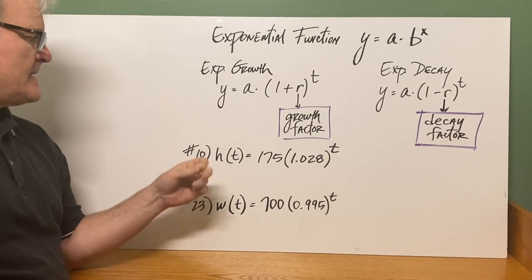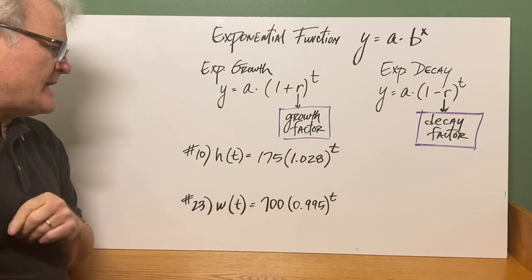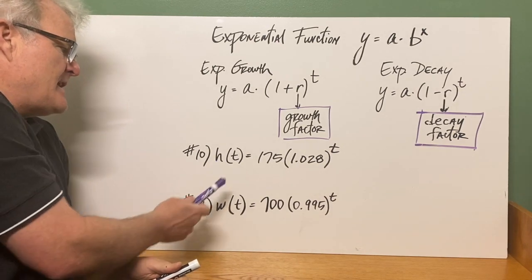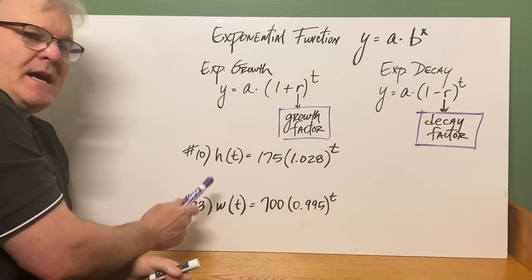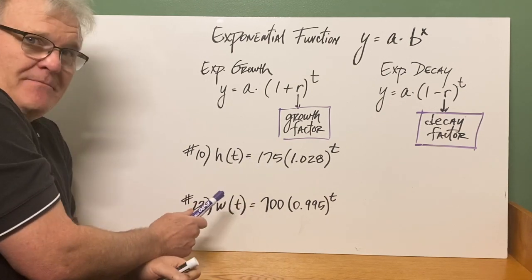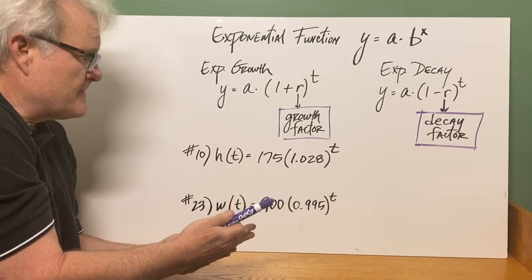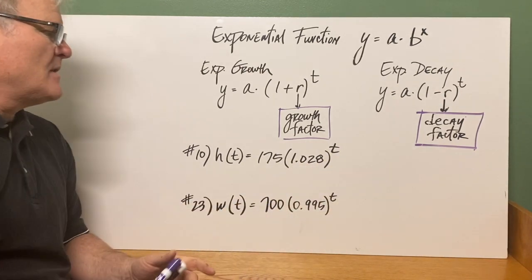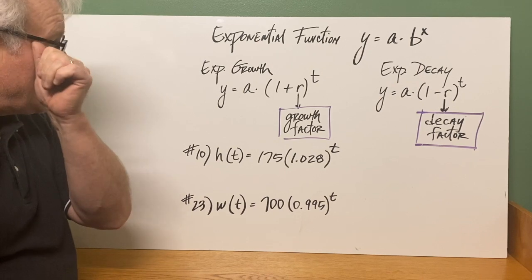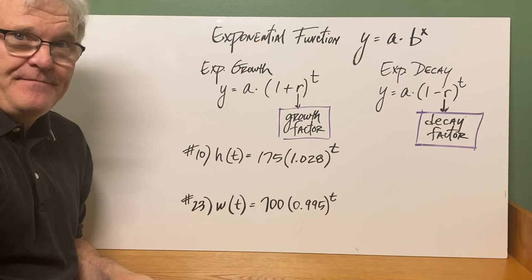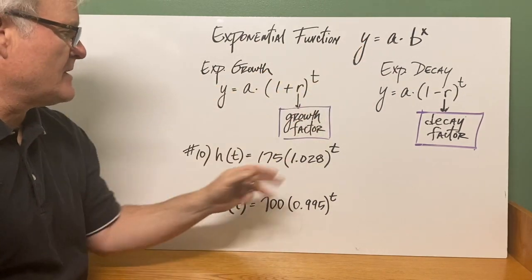The first one here is number 10. It says h of t, remember this is written in function notation. So this is the function h of t. So t is your input time, equals 175 would be your initial amount, whatever that is, times 1.028 raised to the t power. So you should be looking at this one and the initial amount for this would be the 175. That's your a value, the initial amount.